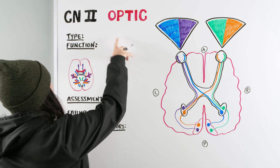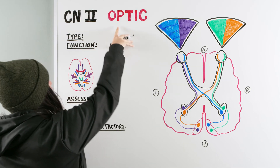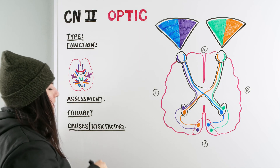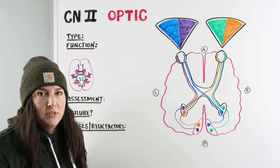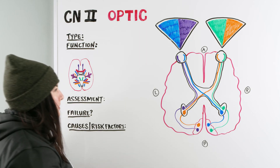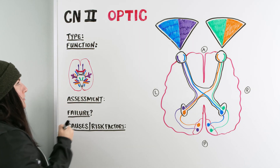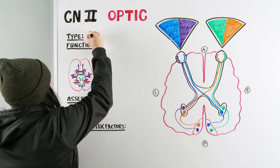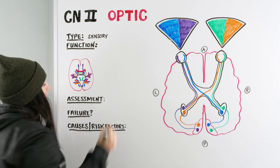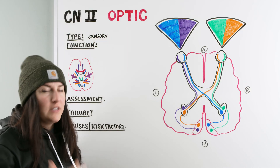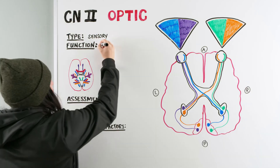As we move through our cranial nerve series, we're on number two right now, the optic nerve. What is the optic nerve? What type is it? The type of nerve is sensory. And what is the function of our optic nerve? It's for vision.